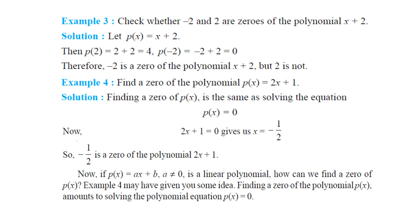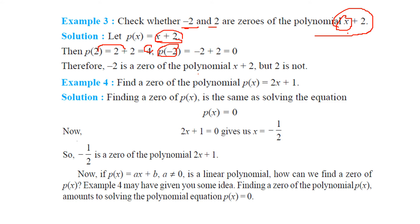We have to check whether minus 2 and 2 are zeros of this polynomial. Put minus 2 here and put 2 here. Let us find out whether this expression becomes 0 or not. If you put 2, you get 4. If you put minus 2, you get 0. So minus 2 is the zero of this expression x plus 2.